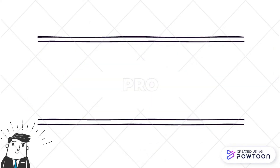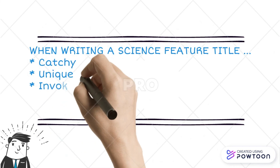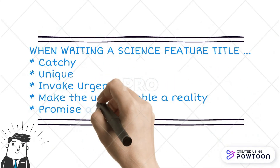Now, when writing a feature title, it should be catchy and unique. You should also invoke urgency and make the unbelievable a reality, and promise a solution to a problem. For example: 'Tasting the Past: The Science of Flavor and the Search for the Origins of Wine,' 'She Has Her Mother's Left,' or 'How to Prevent Diabetes?' Those are just examples, but with your creativity, you can do more and better.